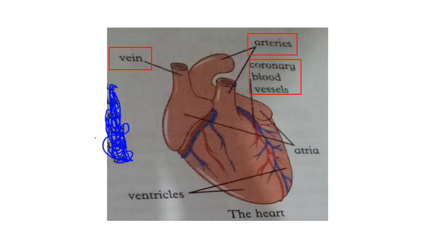Heart ke jo four chambers hain, unمیں se upar waale do chambers ko hum kehte hain atria — yeh patli deewaroon waale hain. Aur neeche waale do chambers ko hum kehte hain ventricles — aur yeh moti deewaroon waale hain.